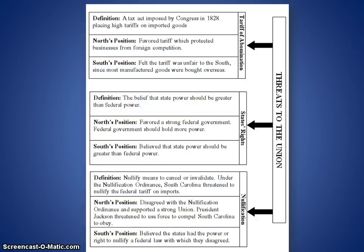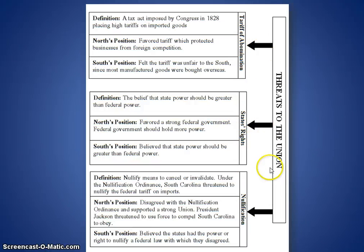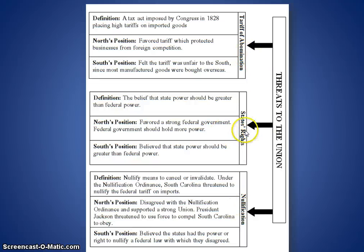Here's a graphic organizer covering the tariff of abominations, states' rights, and the nullification crisis — and how each one threatens the union. The union at this point is another word for the United States. It shows how the North and the South each have different positions on the tariff, states' rights, and nullification. They are at odds. The North and the South can't agree on these issues, and this is going to start to heat up and eventually boil over.